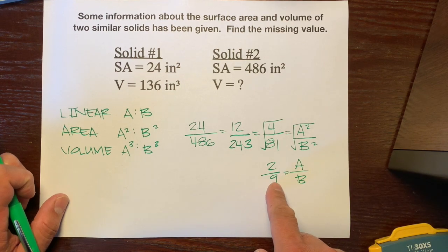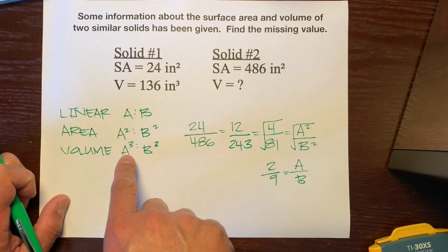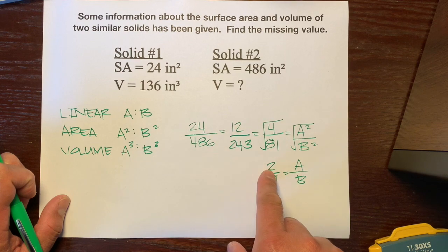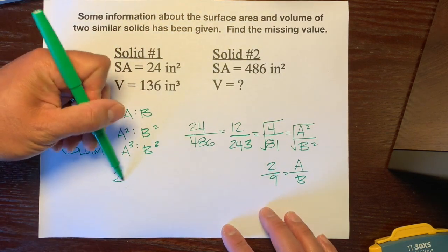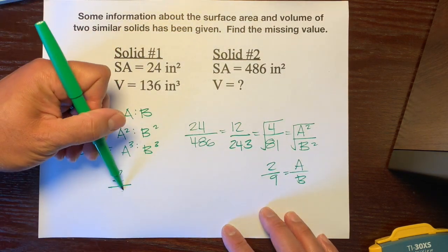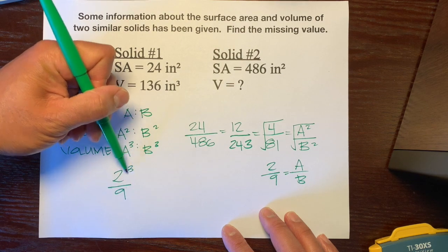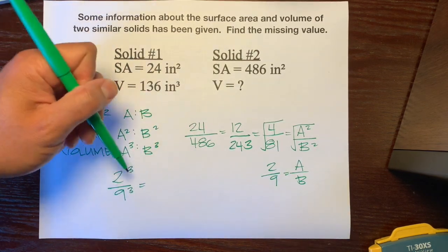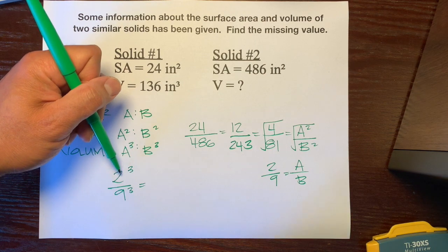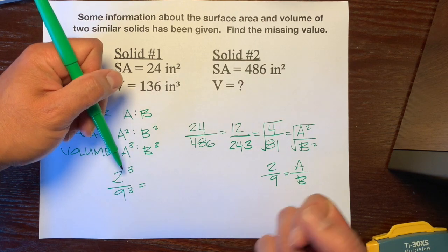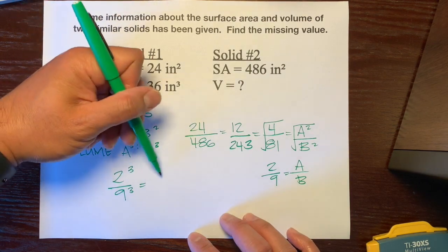Now, we're going to use the linear scale factor to get our volume scale factor. So, what we're going to do with this 2 over 9, just write it over here. We're going to cube it because that's how volume is measured by number of cubes. And 2 cubed, it's not 6. It's 2 times 2 times 2, which is 8.